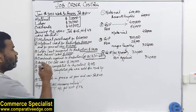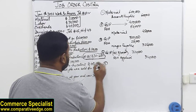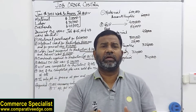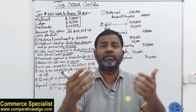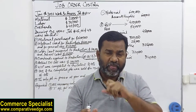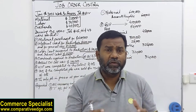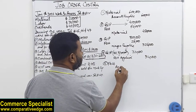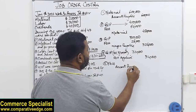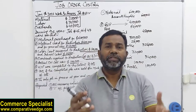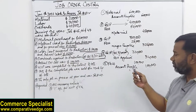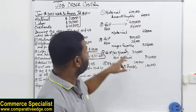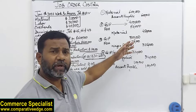Entry number five: actual overhead cost is 100,000. For example, one common overhead is electricity. When you receive the electricity bill, that's the actual amount. You've received the bill but not yet paid, so the entry is: debit factory overhead and credit accounts payable 100,000. When you pay, you debit accounts payable and credit cash or bank. The same applies for wages — when recorded, credit wages payable; when paid, debit wages payable and credit cash.